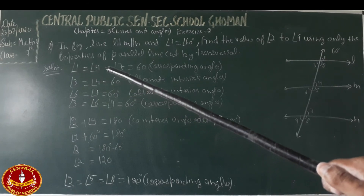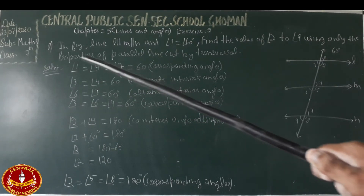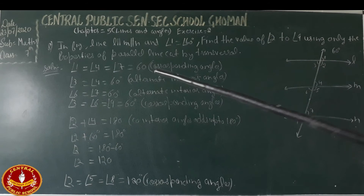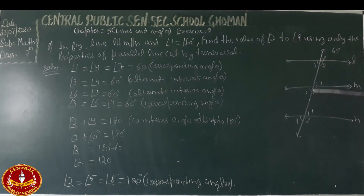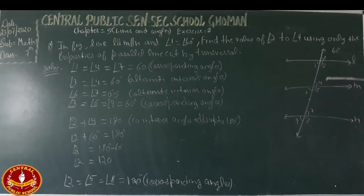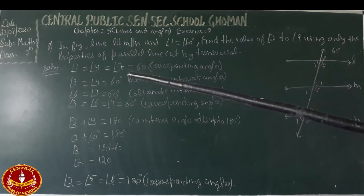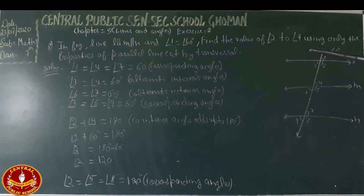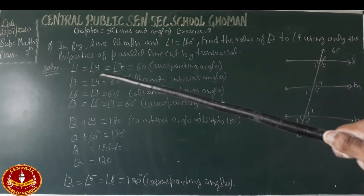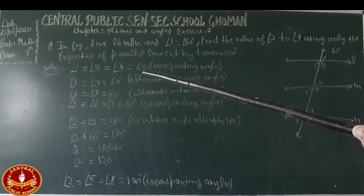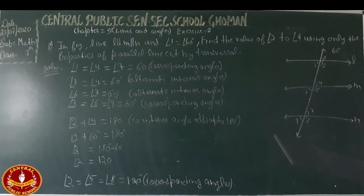Angles 1, 4, and 7 are all equal to 60 degrees because all three lines are parallel and cut by the same transversal. Angles 1 and 4 are corresponding, and angles 4 and 7 are corresponding. Therefore, angles 1, 4, and 7 are all equal to 60 degrees by the corresponding angles property.